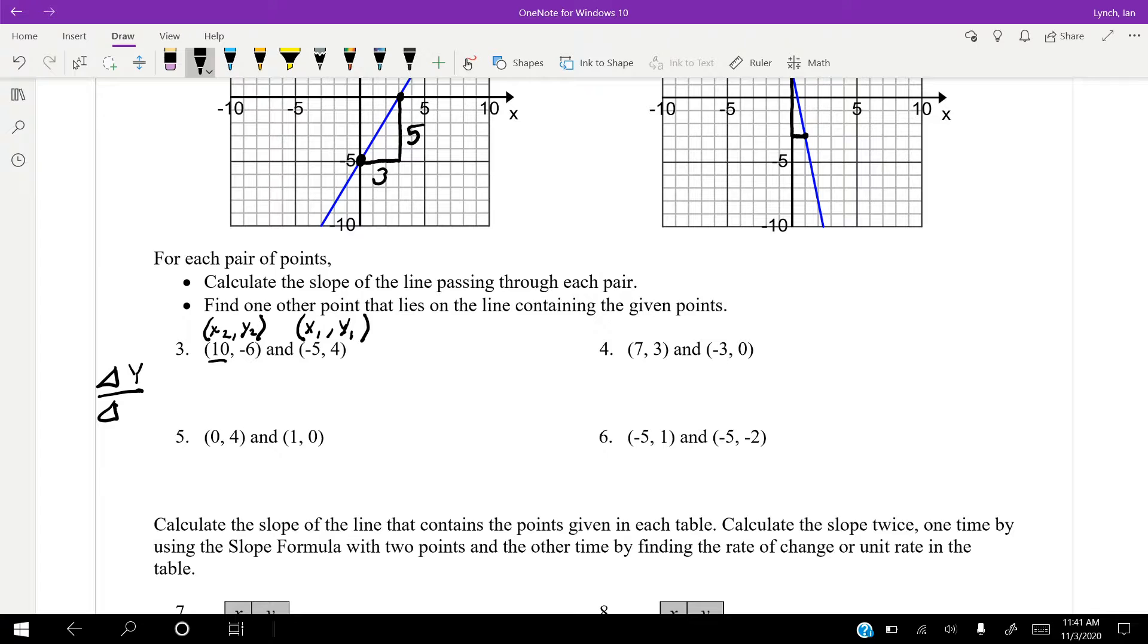So where we finish is y2, so we're going to go negative six minus four, divided by negative five minus ten. So negative six minus four gets us negative ten. Negative five minus ten is negative fifteen.